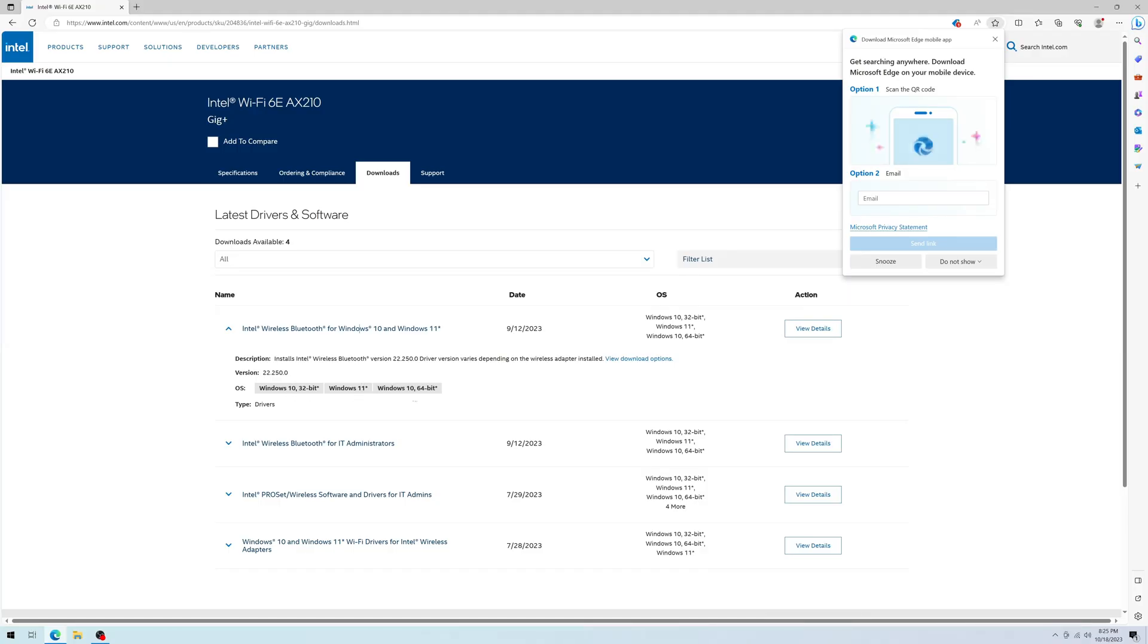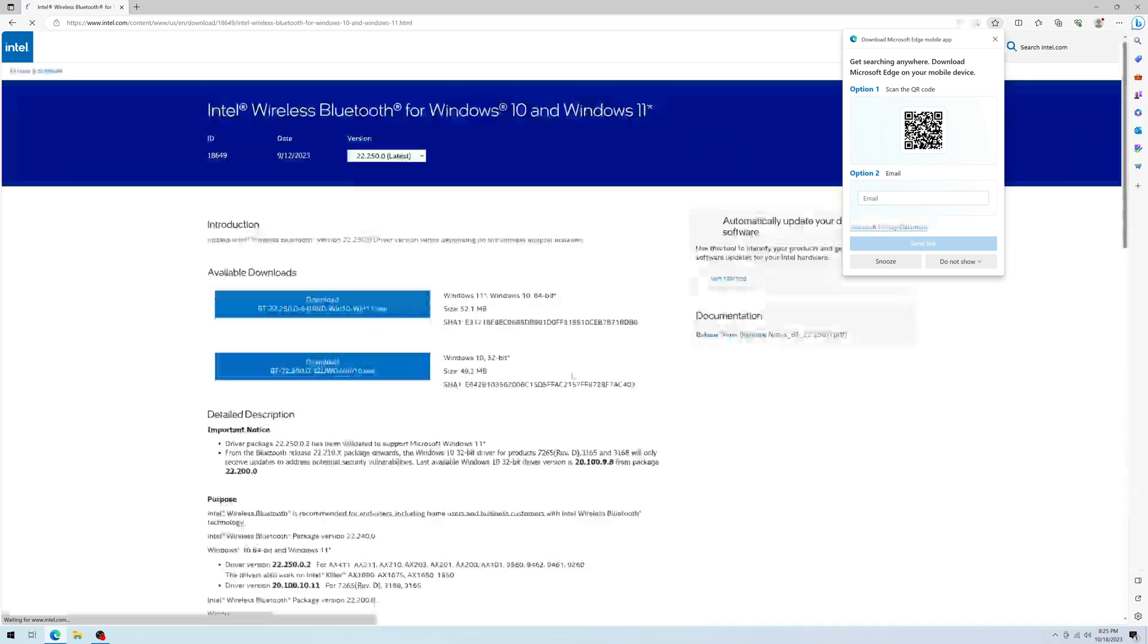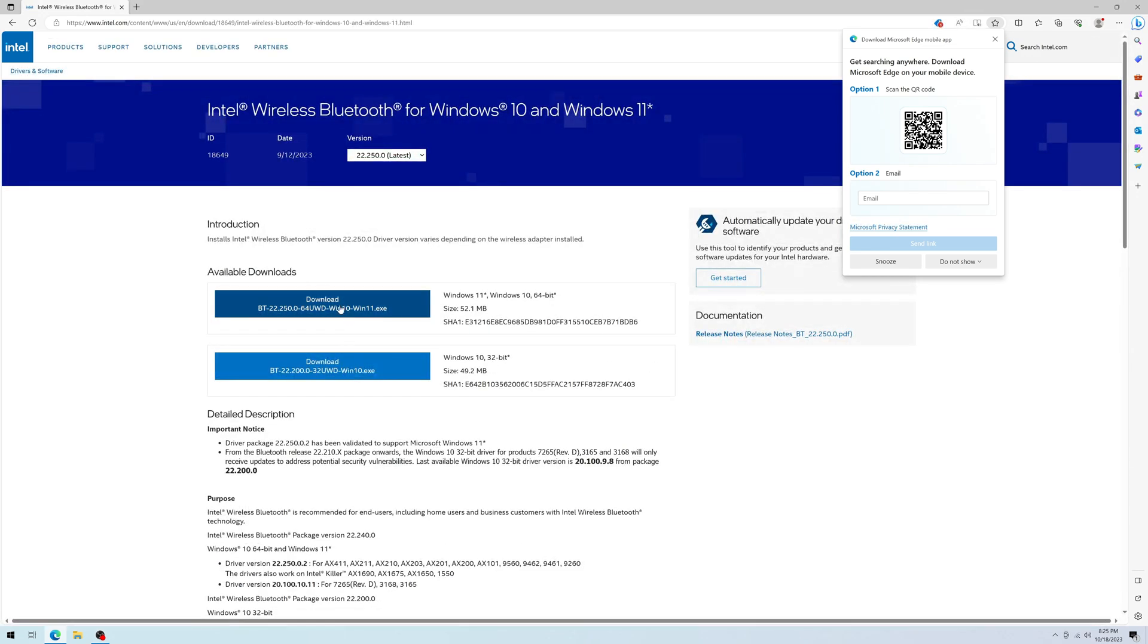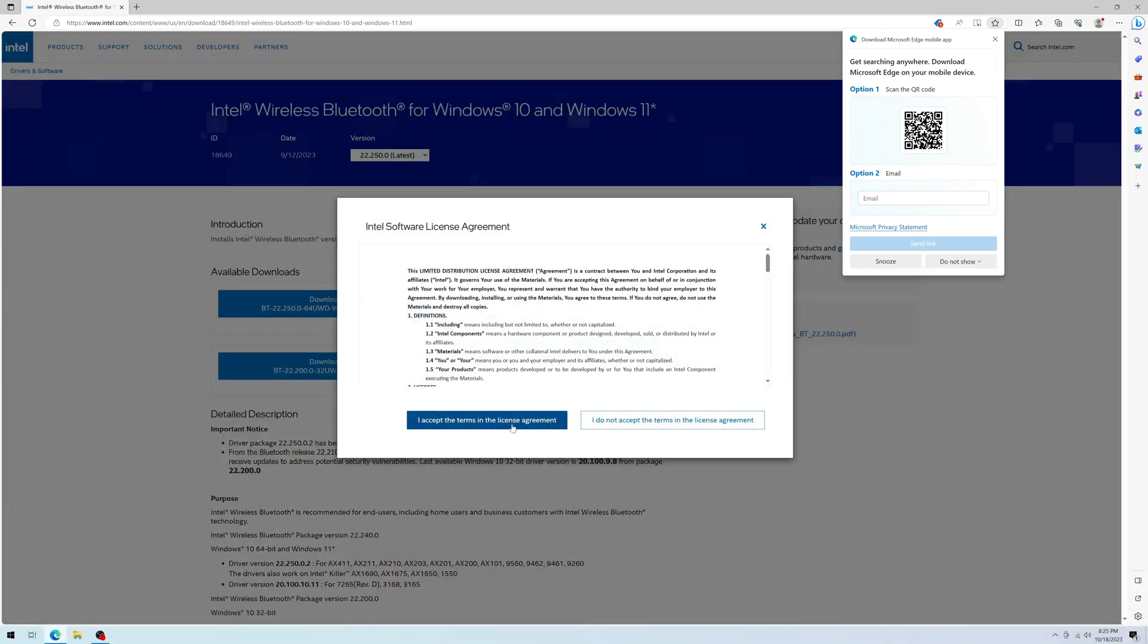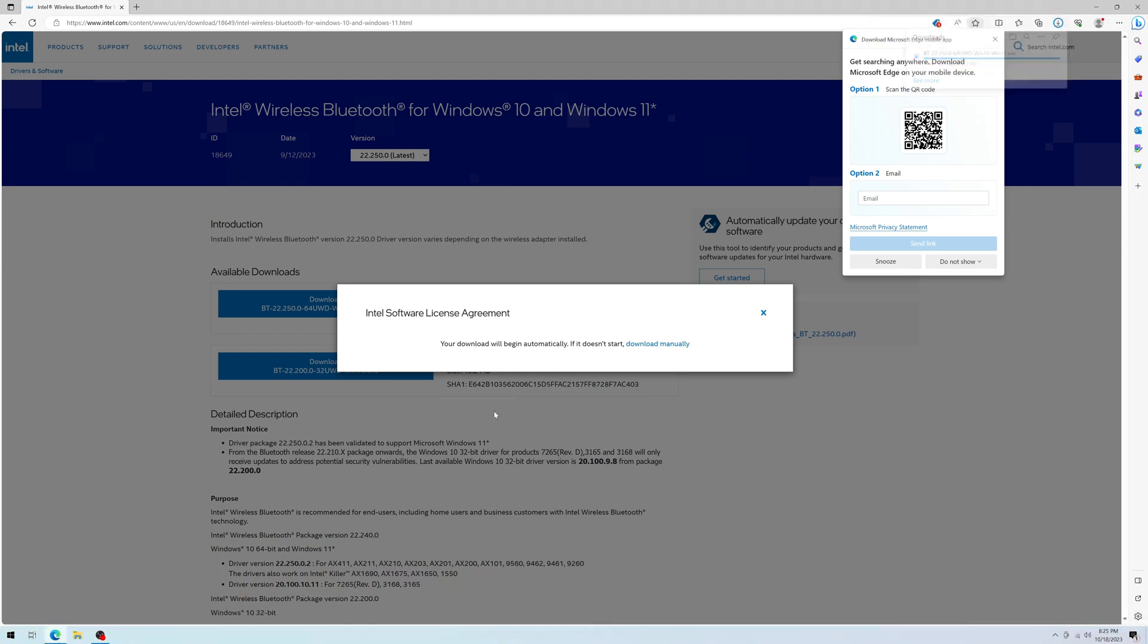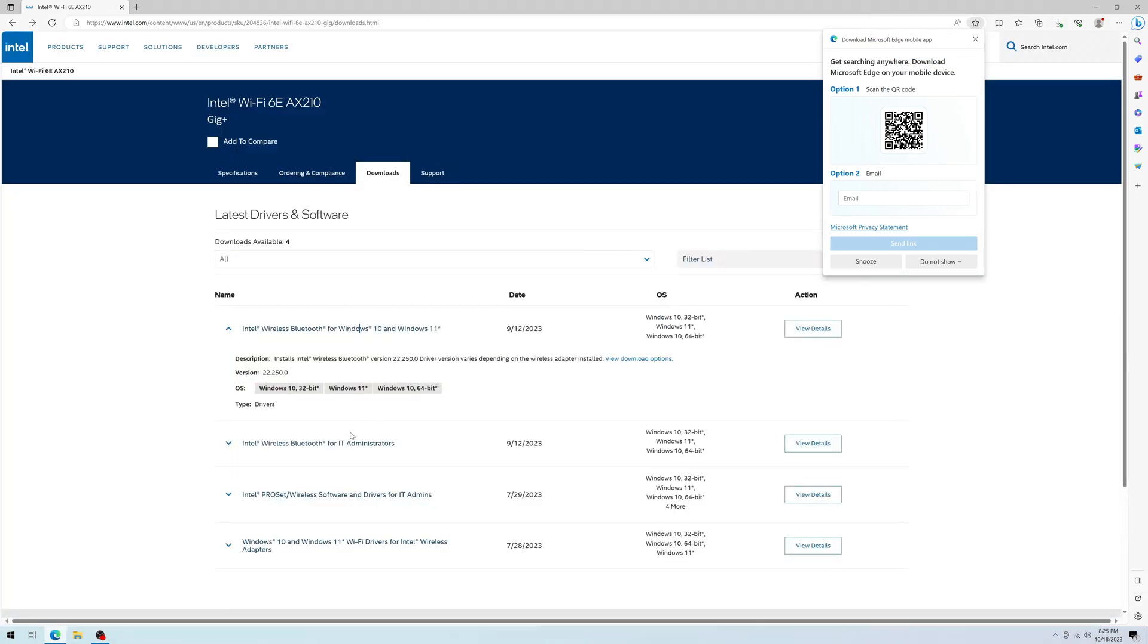Chances are you have an alternate way to connect to the internet if you're just adding this card to an already built computer. But if you're building a brand new computer and really need the Wi-Fi, find some way to download the drivers for whatever card you bought and put them on a USB flash drive first. That way, when you start up your computer, you can install the drivers and get on the internet right away.